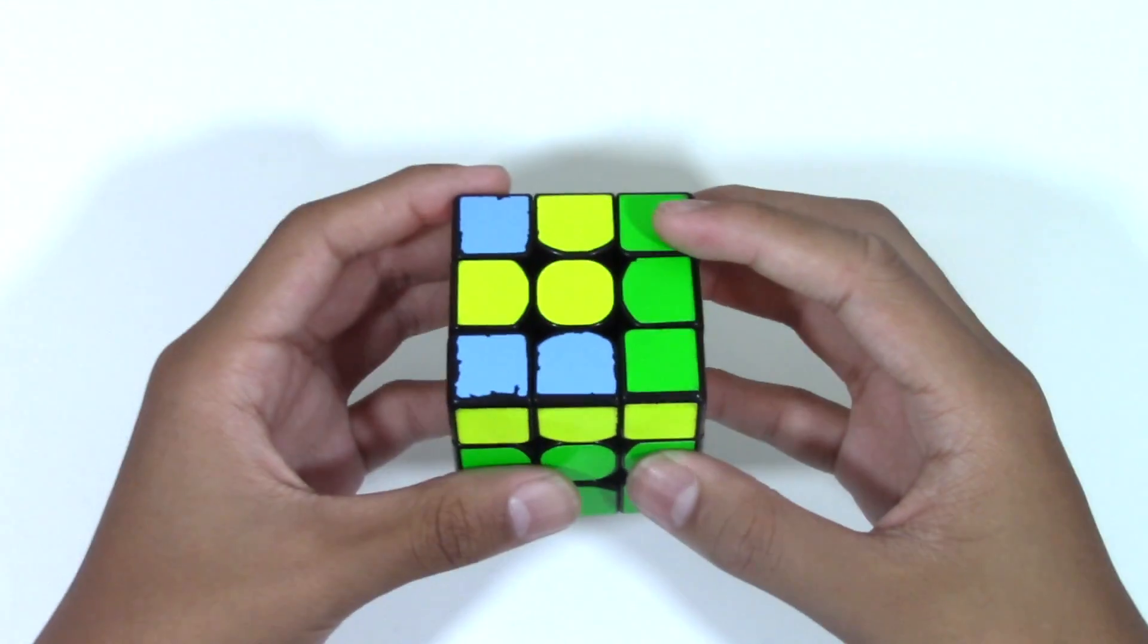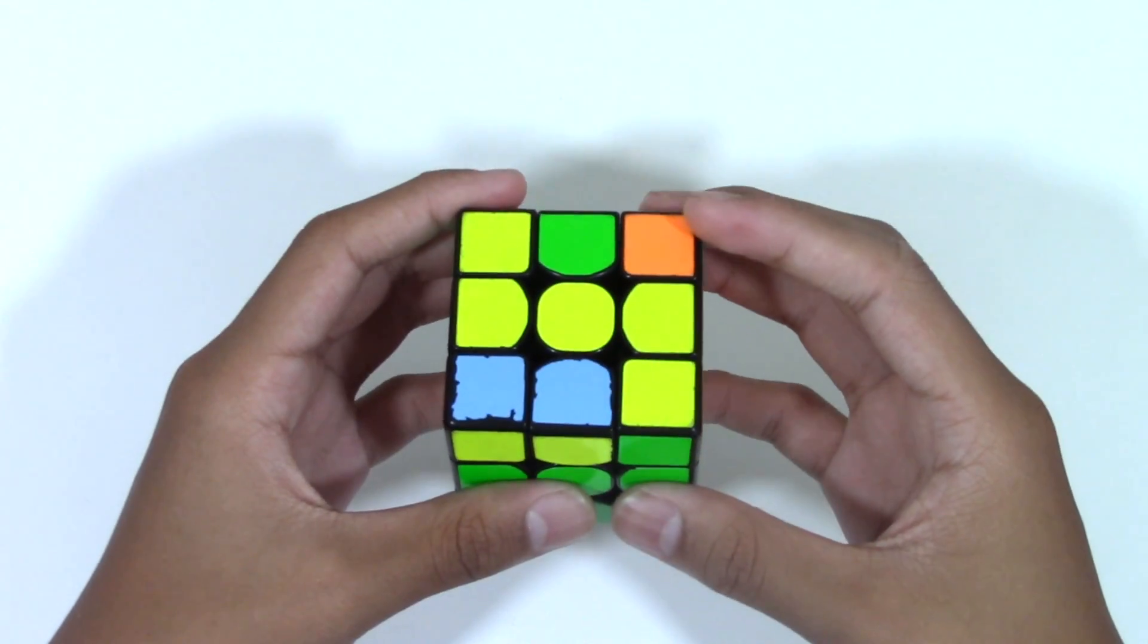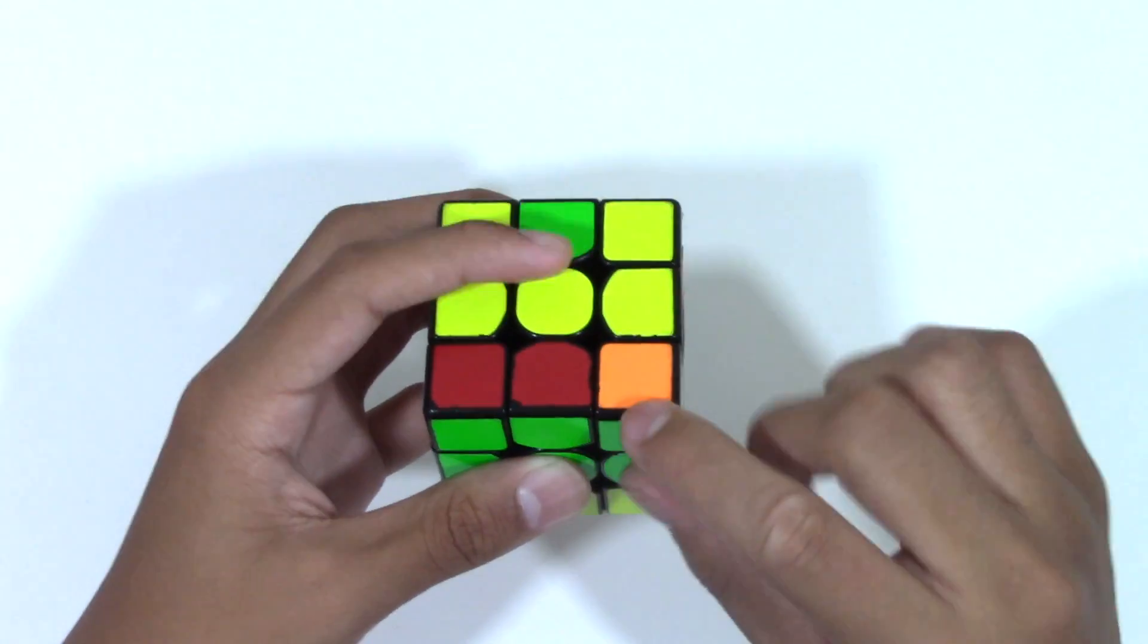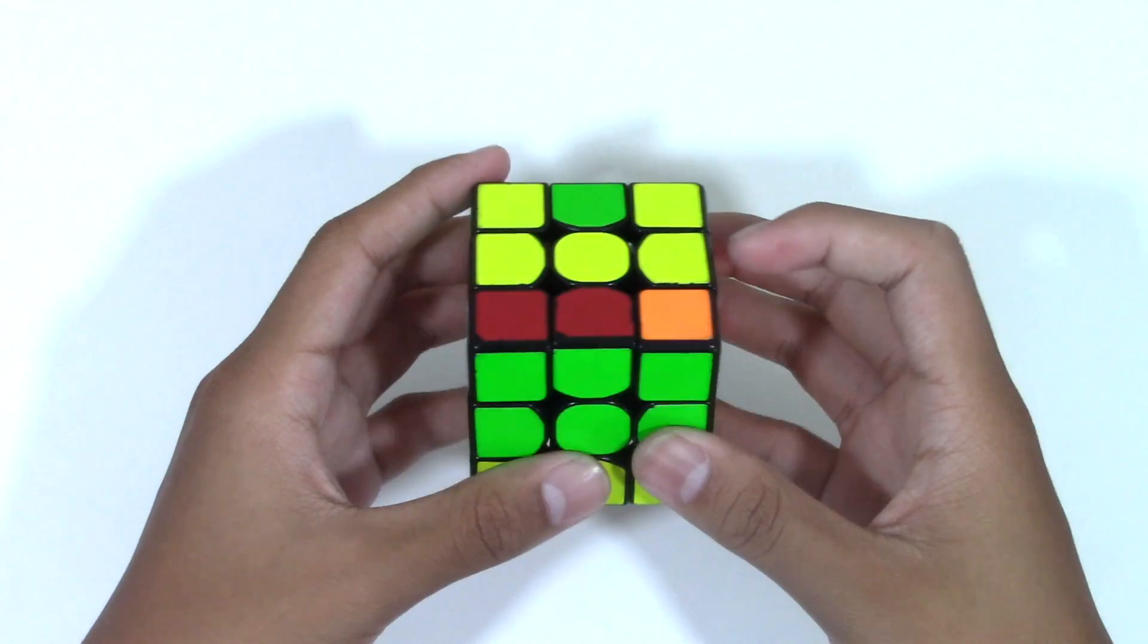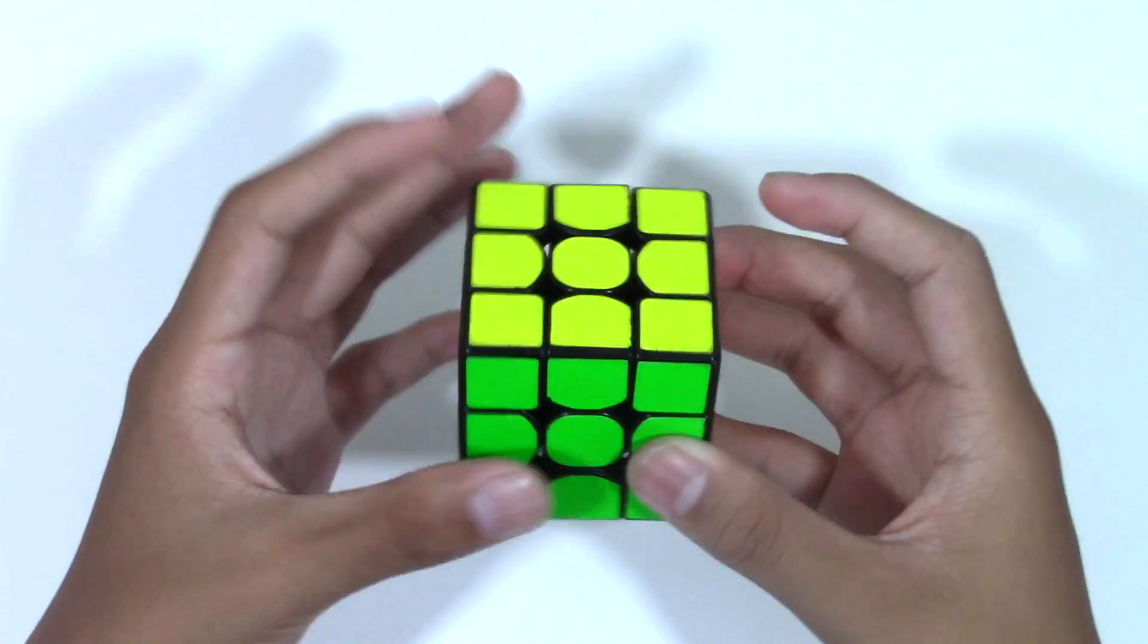So basically what it is is just creating this F2L case, and then putting this down like that, so basically moving that up, putting this pair in, and then just finishing the rest.